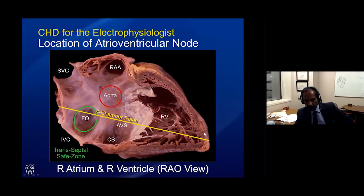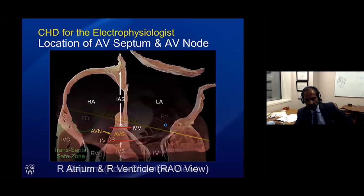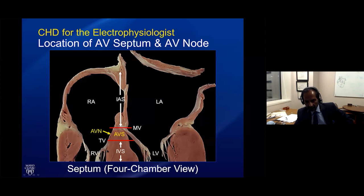We approximate the AV node in the border zone between the septal leaflet of the tricuspid valve, the roof of the coronary sinus, and the tendon of Todaro — which can be visualized as the eustachian ridge extending up to the membranous septum where the His bundle is recorded. Another way to think about its location is in a perpendicular four-chamber plane cutting through the fossa ovalis, the AV node site, and the septal leaflet. The compact AV node is posterior and lower than the membranous septum, lying within the atrioventricular septum, with the right atrium on one side and the left ventricle on the other.